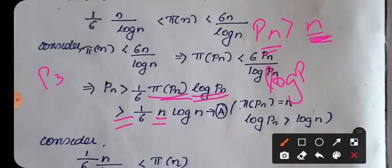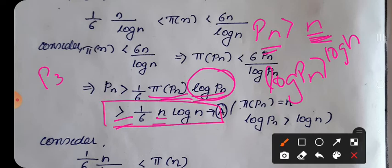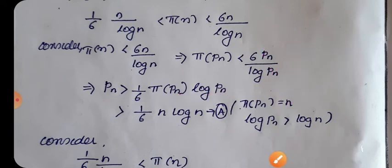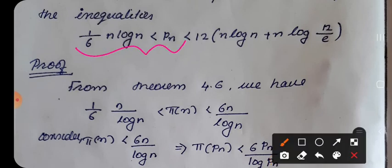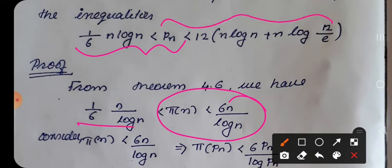Since log(pn) > log(n), we have 1/6 · n·log(n) < 1/6 · n·log(pn), which is less than pn. Therefore, 1/6 · n·log(n) < pn. This proves the first inequality. We use the first part of the 4.6 inequality to establish this.